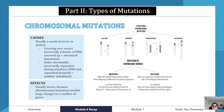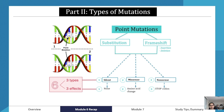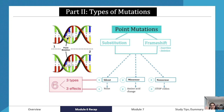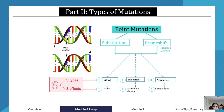Just going back quickly — with point mutations, there are two types: substitution, when a base has been switched out, and frameshift, when either a base has been inserted or deleted. As a result, you get three different types of effects.